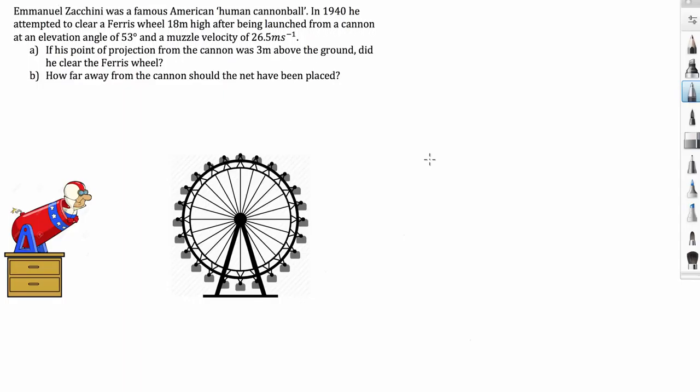We've got a projectile motion question here. Emmanuel Zachini was a famous American human cannonball. In 1940, he attempted to clear a Ferris wheel that is 18 meters high after being launched from a cannon at an elevation of 53 degrees and a muzzle velocity of 26.5 meters per second.